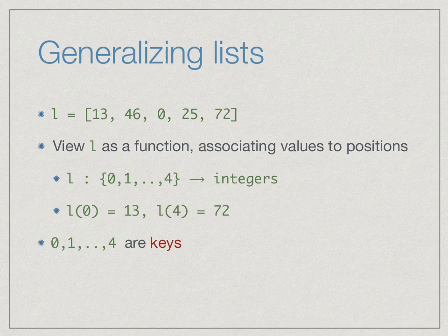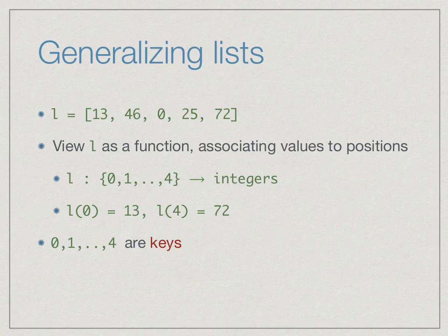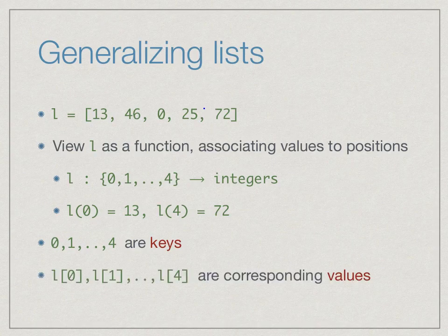In programming language terms, 0, 1, 2, 3, 4 are called keys — the values with which items are associated. We search for the item associated with key 1 and get back 46. So we have keys, and the corresponding entries in the list are called values. A list is therefore one way of associating keys to values.